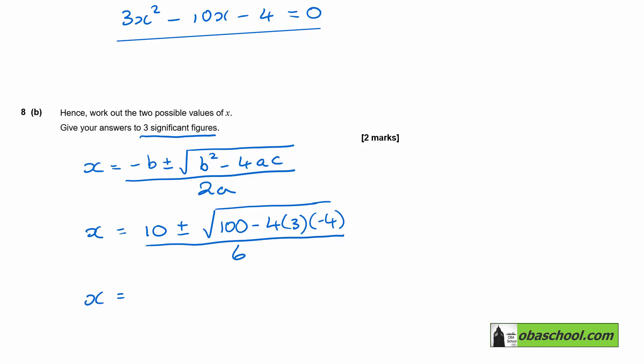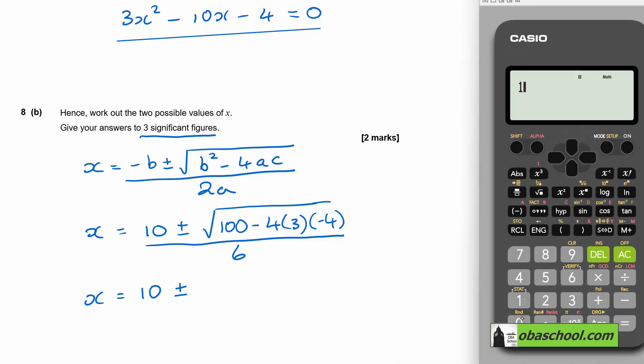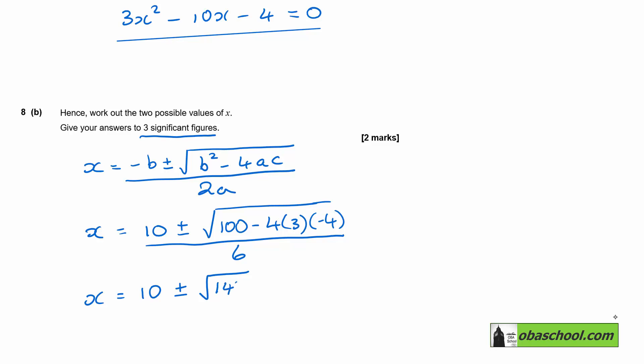Now the way I always do this is that I work out what's under the square root next. So I've got 100, and the minus and the minus will make it into a plus, 4 times 3 times 4. And so that's 148, divided by 6.